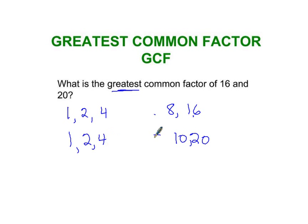How about 4? 4 times 5 is 20. Now what is the largest number that's found in both lists?